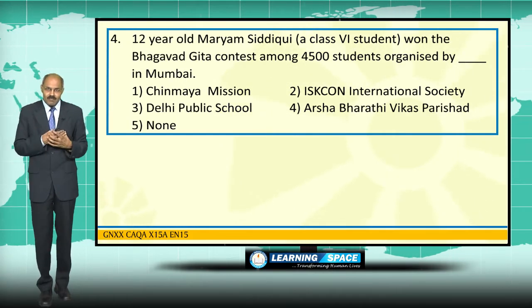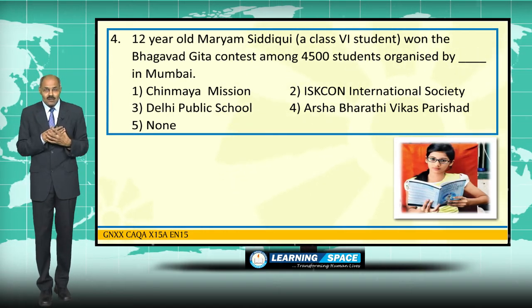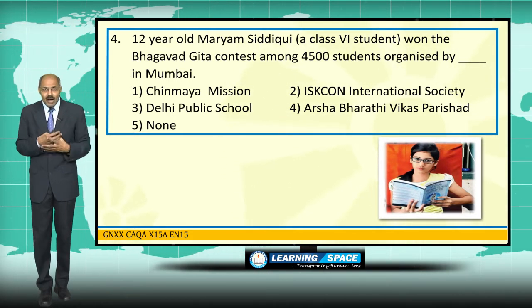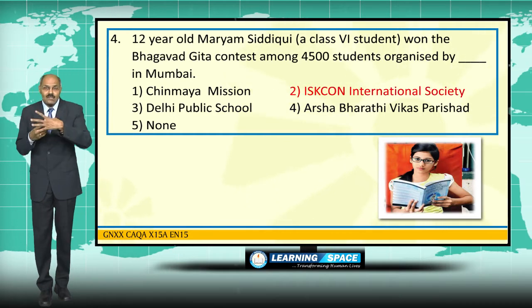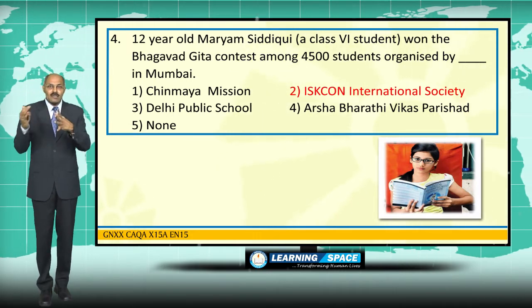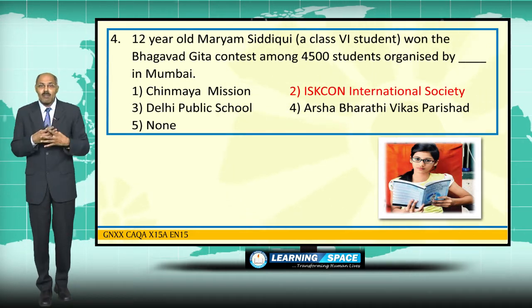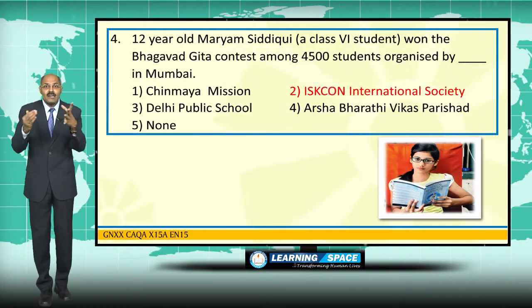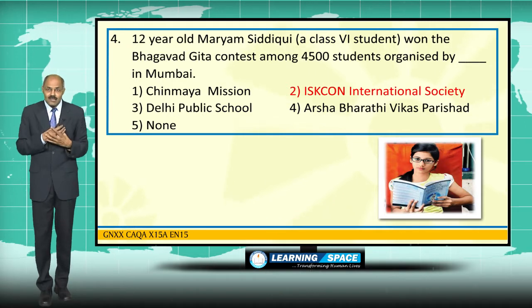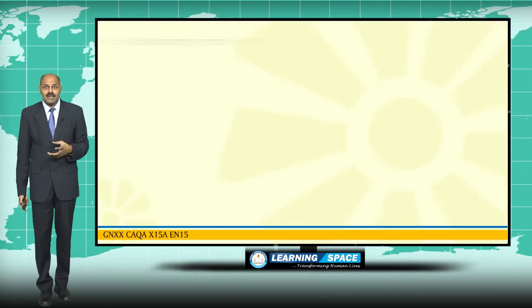12-year-old Mariam Siddhiki, a Class 6th student, won the Bhagavad Gita contest among almost 4,500 students organized by ISKCON International Society in Mumbai. She scored 100 out of 100 marks. She is also conversant not only on the Quran but also on the Bible.